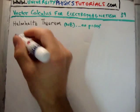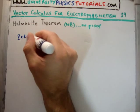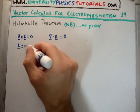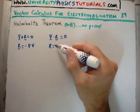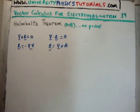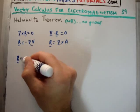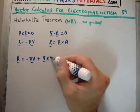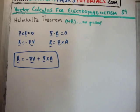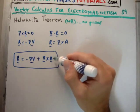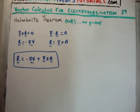To summarize: we spoke about a curl-free field where R = -∇V, and a divergence-free field where R = ∇×A. The Helmholtz theorem generalizes this: for any vector field R, we can write R = -∇V + ∇×A. Every single vector field can be written in this form. In electromagnetism, V is the electric scalar potential and A is the magnetic vector potential, together describing the electromagnetic field.